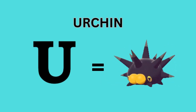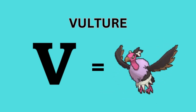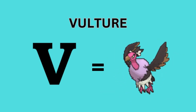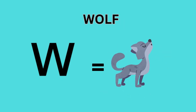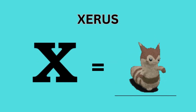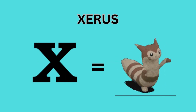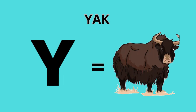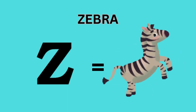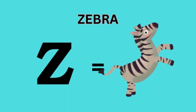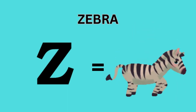U for Urchin. V for Vulture. W for Wolf. X for Xerus. Y for Yak. Z for Zebra.